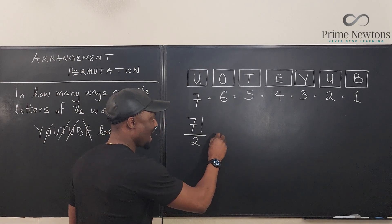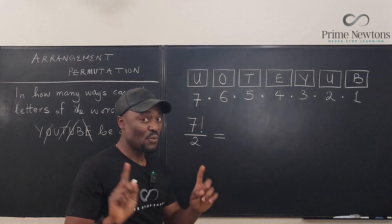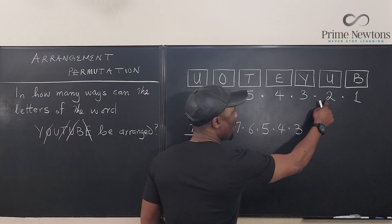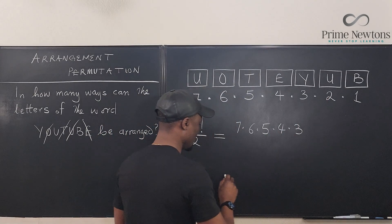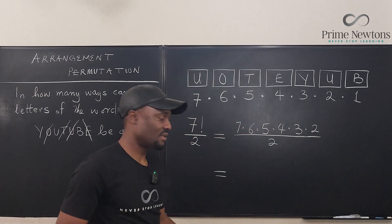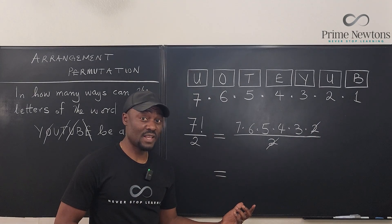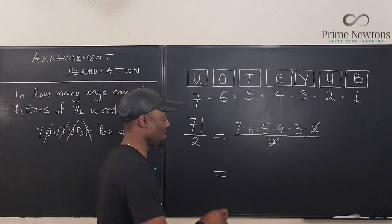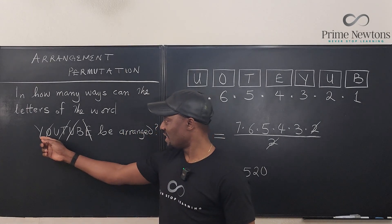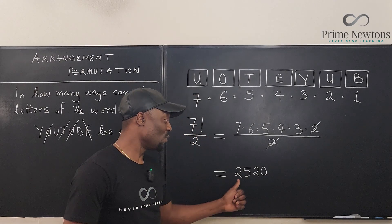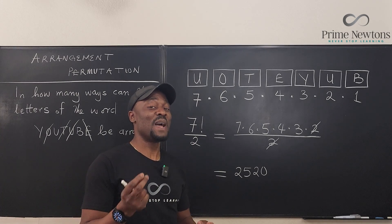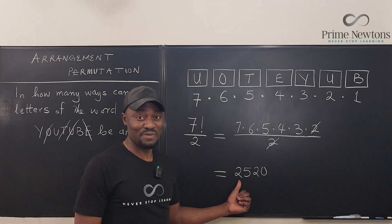So the total number of arrangements of the letters of the word YouTube is: treat them as if they are completely different, then divide by the number of similar elements. We divide by two because there are two identical U's. So the answer is seven factorial over two, which we calculate as seven times six times five times four times three times two — the two in the denominator cancels — giving us half of 5040, which is 2520. The number of ways you can rearrange the seven letters of the word YouTube is 2520 ways. That's why you never gamble — just imagine your chances of guessing right if there are 2520 options.